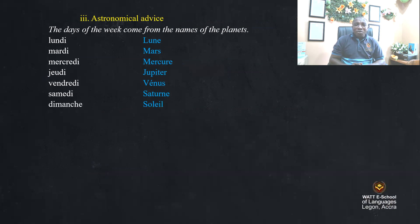Lundi comes from moon, mardi comes from Mars, mercredi comes from Mercury, jeudi comes from Jupiter, vendredi comes from Venus, samedi comes from Saturn, and dimanche comes from sun — soleil is sun. Let's read the planets again.